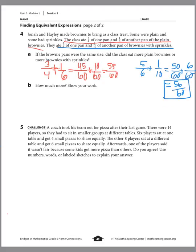How much more? 56 sixtieths minus 55 sixtieths — the answer is 1 sixtieth more sprinkle brownies than plain.